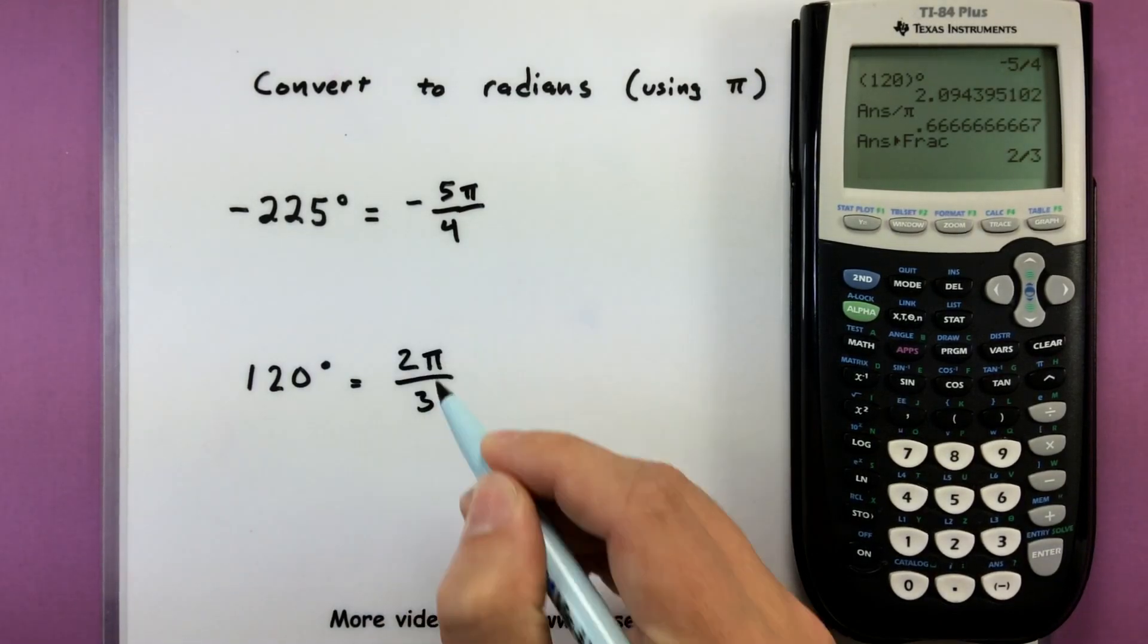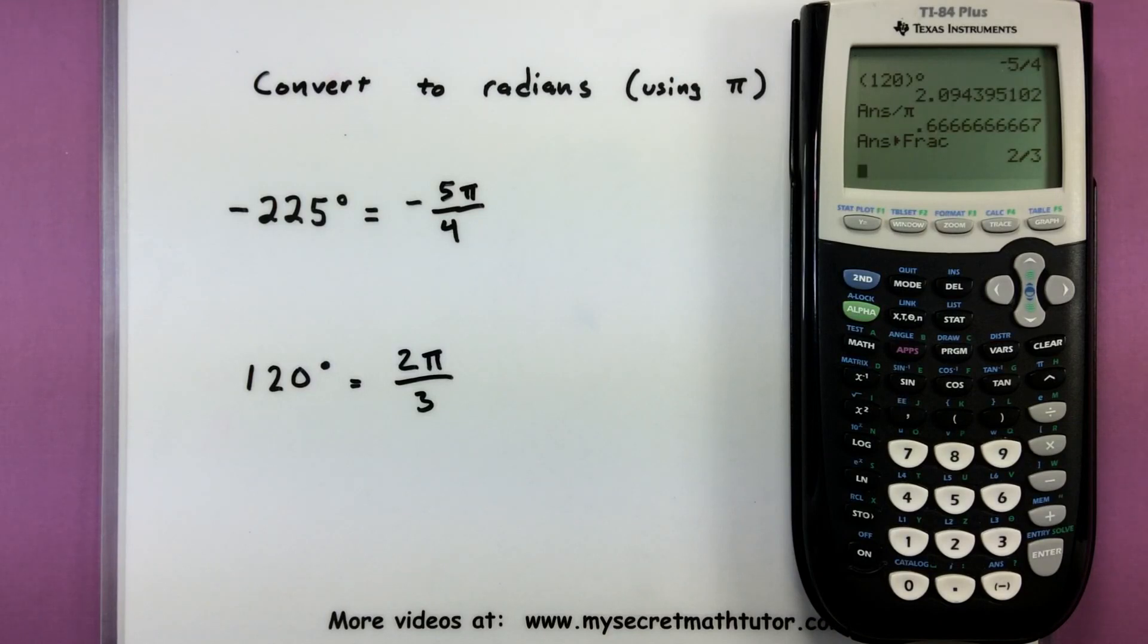Now let's go ahead and put that π back in. So 120 degrees is equal to 2π divided by 3. Alright, so hopefully that gives you a bunch of tools on how you can get the most out of your calculator. If you'd like to see some more videos, please visit MySecretMathTutor.com.